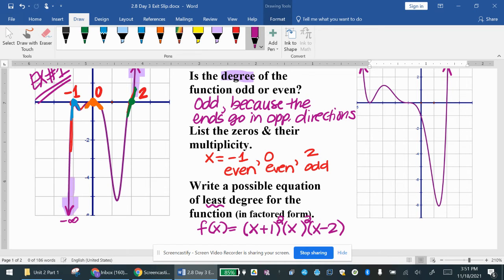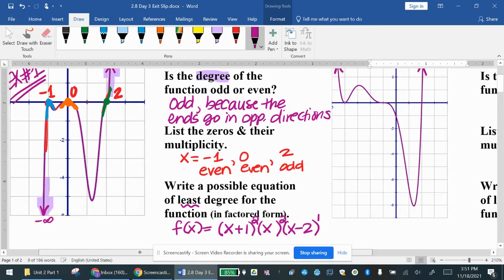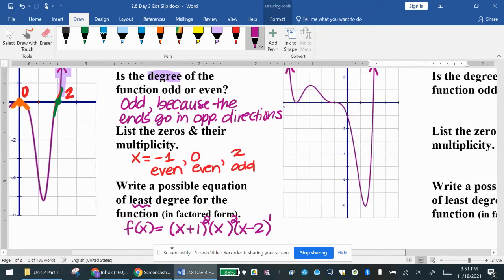I'm going to put a two on that one and this one because those were even. And then odd, the smallest odd number is one. And that's it for factored form equation of least degree.